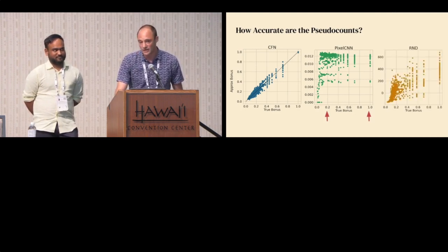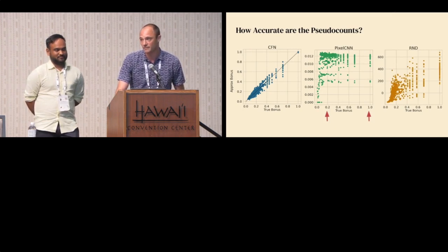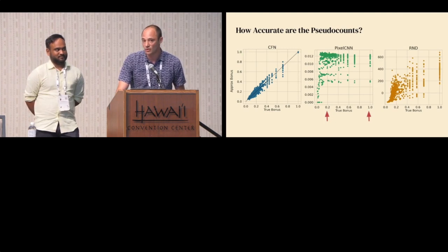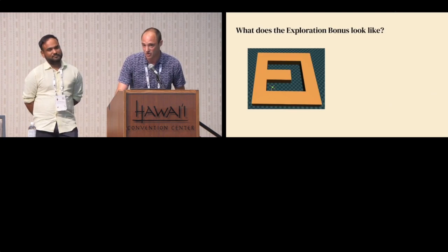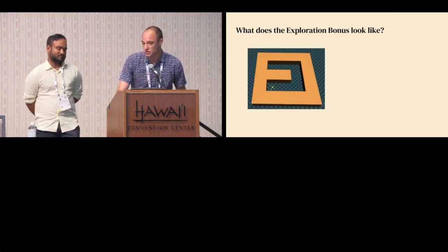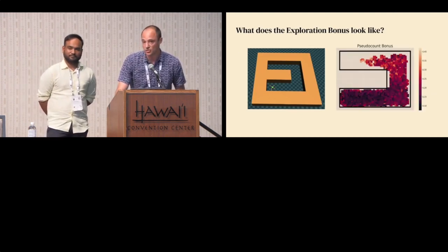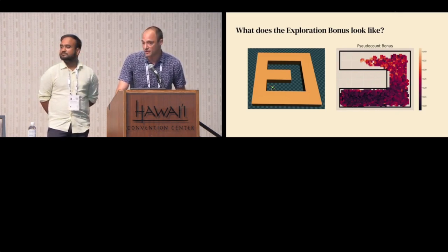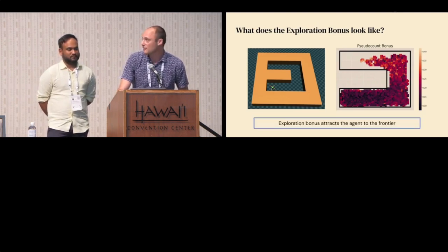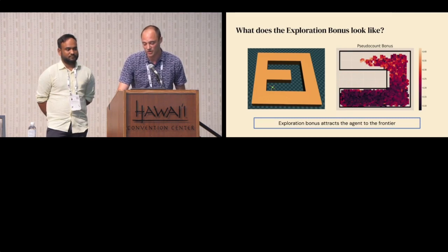RND, which is not a pseudo count-based method but a novelty prediction method, is much less well correlated with the underlying bonus we're trying to approximate. When we scale to continuous control problems where we don't have access to underlying counts, we find qualitatively that these pseudo count-based bonuses generalize as desired — giving high bonus to states along the frontier of exploration near the end of the maze, and low bonus near the start where the agent spawns frequently. This pushes the agent toward the frontier, which is exactly what we want.